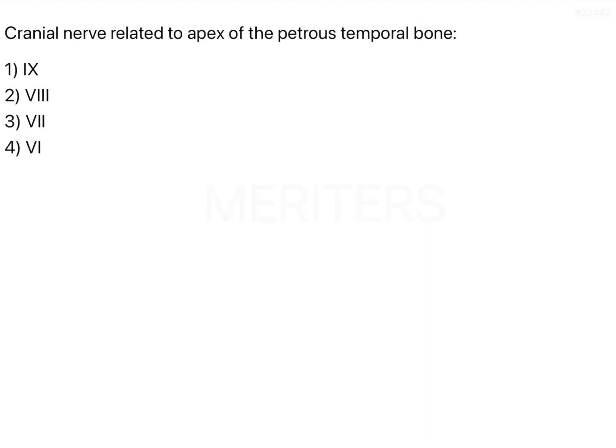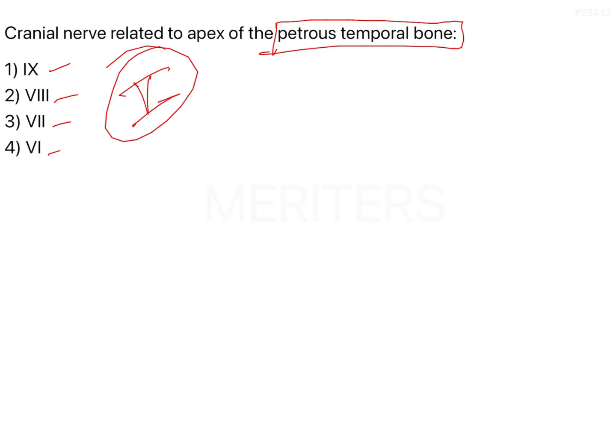This is one of the advanced questions. It is a very obvious question if asked about cranial nerve 5, but the options given here are 9th, 7th, 8th, and 6th. The cranial nerve related to the apex of the petrous temporal bone — the key word is the petrous temporal bone — and you don't see the trigeminal nerve in the options.